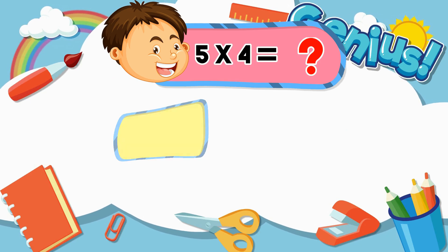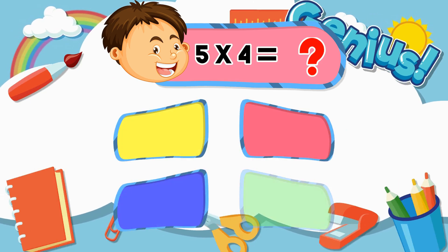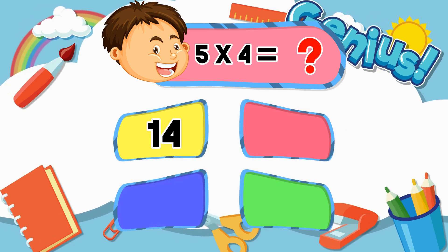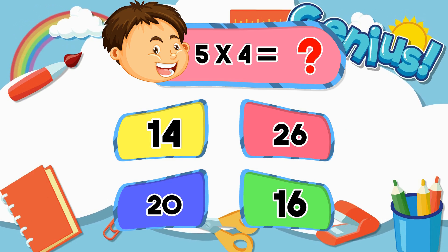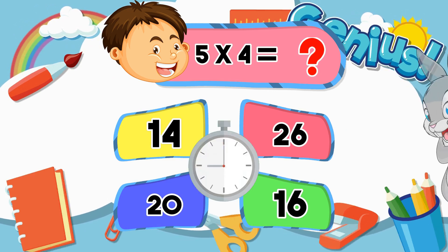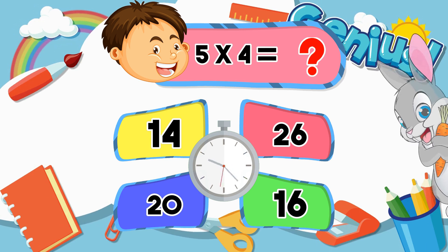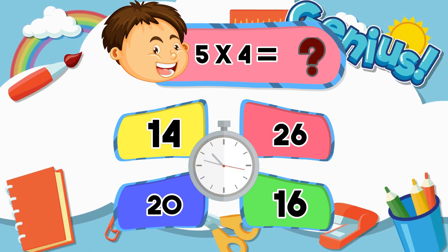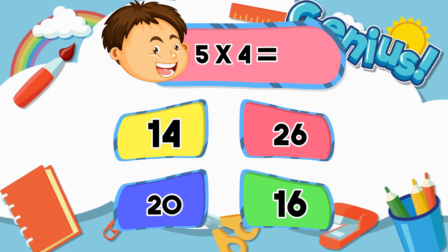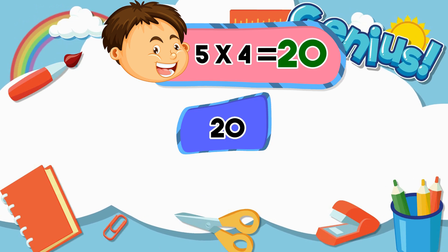What is 5 times 4? 14, 20, 20, 16. The correct answer is 20.